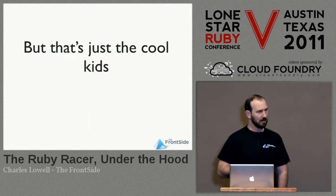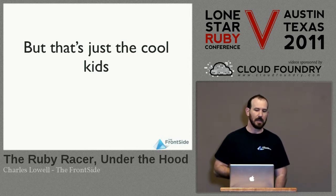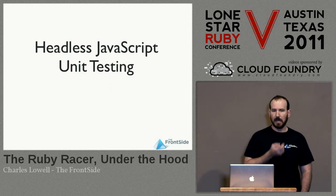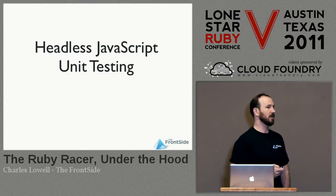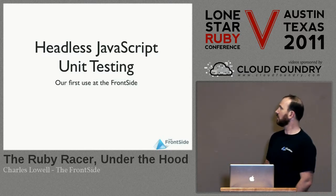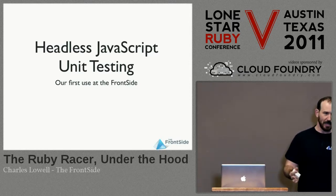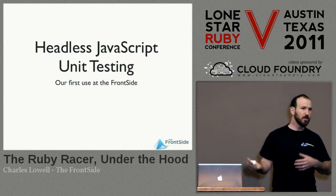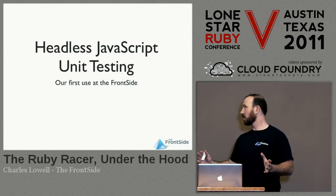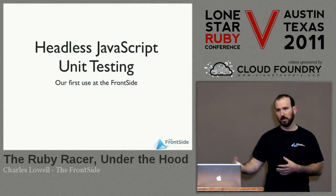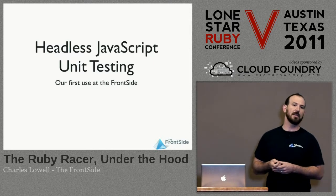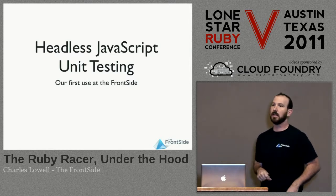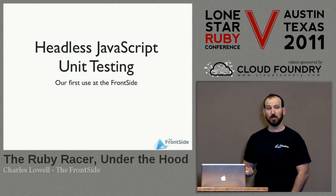But that's only the tip of the iceberg. There are actually a lot of other uses. The first one is unit testing JavaScript. This is actually the very first use that we ever used it for. With the Ruby Racer, you can spin up a JavaScript environment, load whatever you want into it, and it doesn't require a display or a browser. We use JS DOM and Node HTML parser to simulate a browser environment, and we can run all of our JavaScript tests on our CI server. And they run really, really fast.